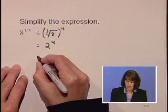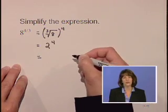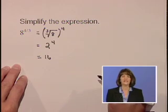And 2 to the fourth power, 2 times 2 times 2 times 2, is equal to 16.